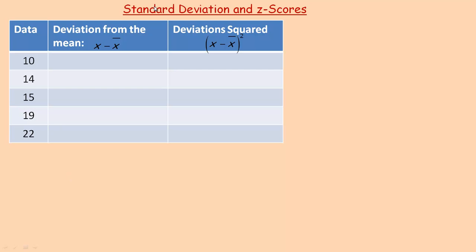In this tutorial, we're going to take a look at standard deviation and z-scores. In the first example on this first page, I'm going to show how to calculate standard deviation manually. I've got a pretty small example here — there are only five data points — because this can become fairly lengthy and cumbersome if you have a lot of data points.